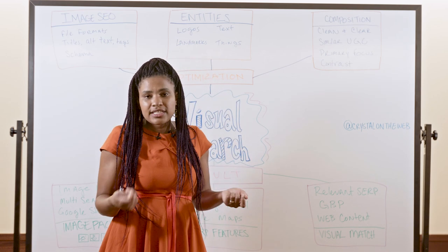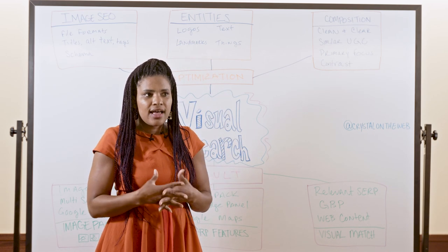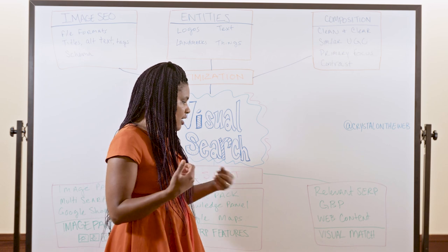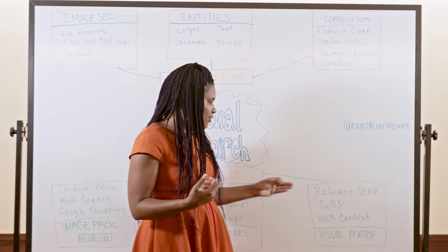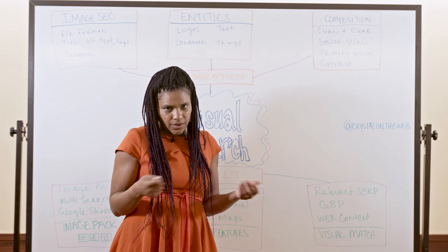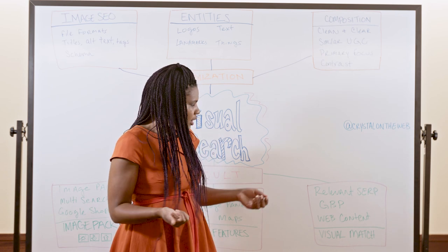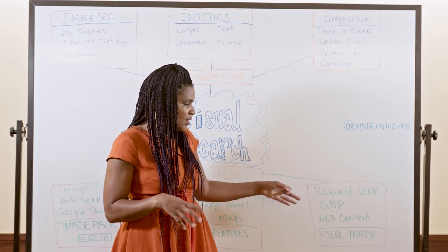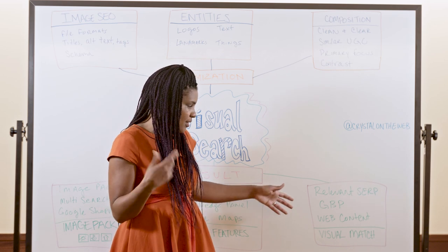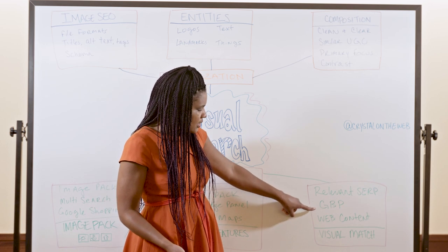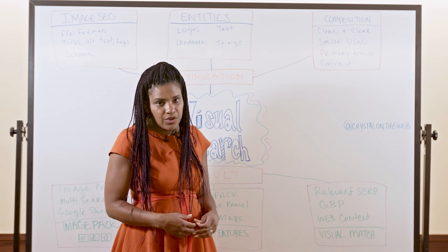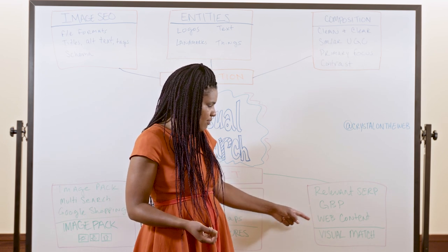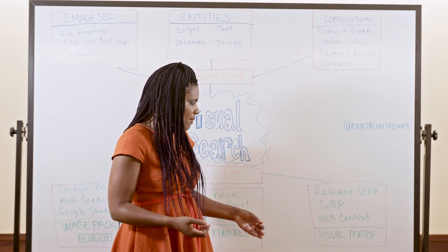Finally, the other kinds of results that Google might give to someone when they make a visual search is a visual match. So visual matches are images that look really similar to the picture that the person took. And these will sometimes return an image pack, sometimes return a local pack. And they'll sometimes just return a general SERP result, like including a featured snippet that might have an image in it. You might also see something for a Google Business Profile. So if there is something that's local that has that, then they may very well get a Google Business Profile visual match. And also just general web content that might come through there.